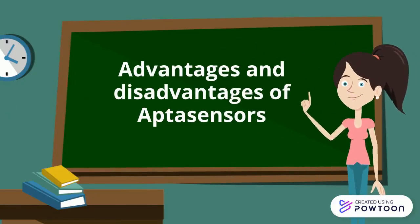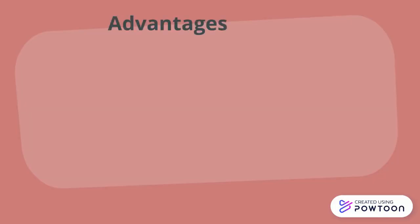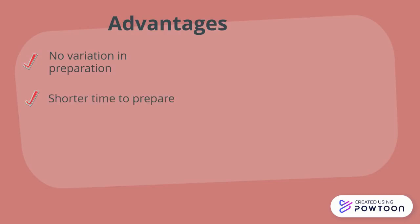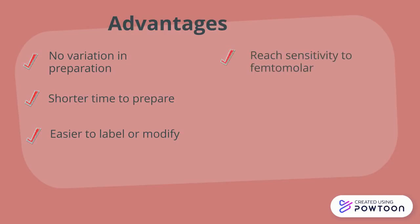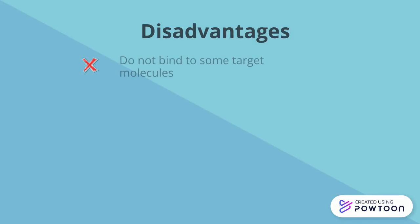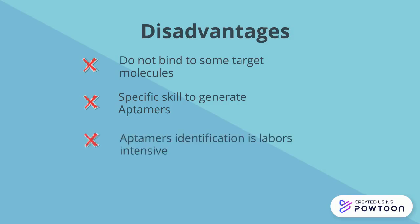Next, we move on to the advantages and disadvantages of aptamers. The advantages are: no variation in preparation, shorter time to prepare, easier to label or modify, high sensitivity down to the femtomolar range, and smaller size and cheaper. The disadvantages are: they do not bind to some target molecules, specific skill is required to generate aptamers, and aptamer identification is labor intensive.